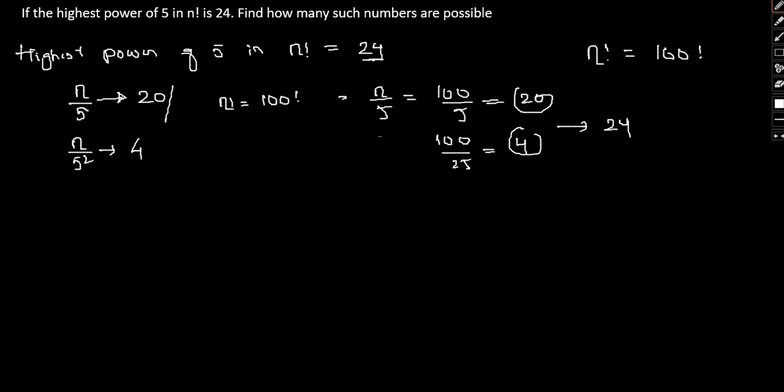Now, how many such numbers will be, how many such numbers will have 24 factorial. Now, see, had this number, this 4,